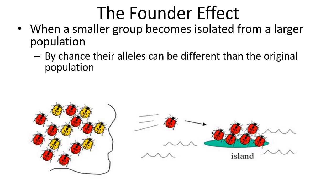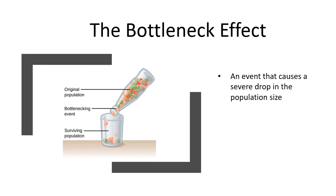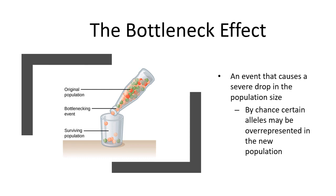The bottleneck effect is similar — the population is decreased to a very small amount and by random chance those that remain probably have a different genetic makeup than the original population. In this example, dark red ones are present in the original population but absent after the population has been reduced to a small size.